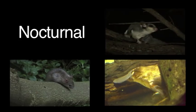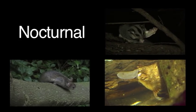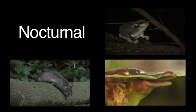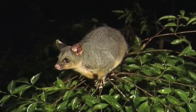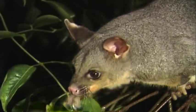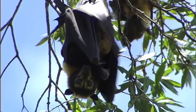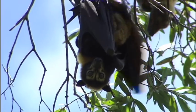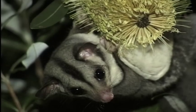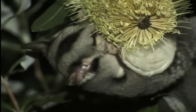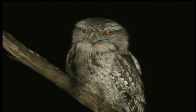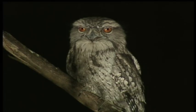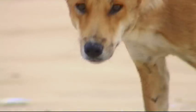An animal that is active during the night is called nocturnal. Possums are nocturnal animals that live in the Australian bushland. Other examples are bats, sugar gliders, platypus, tawny frogmouths, bandicoots and dingoes.